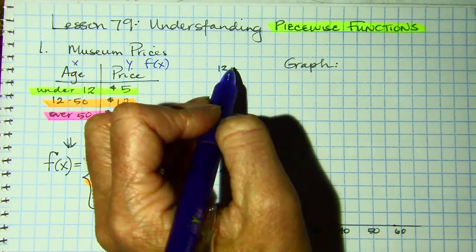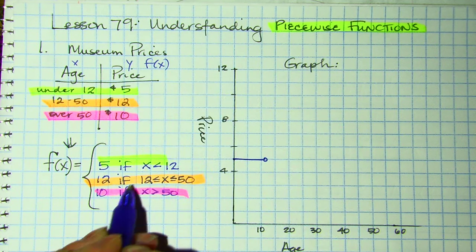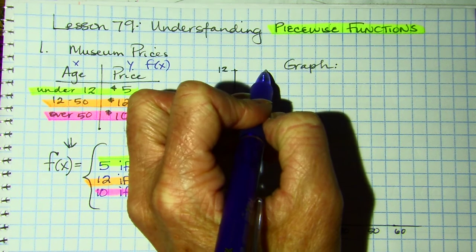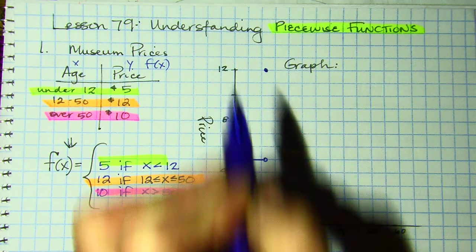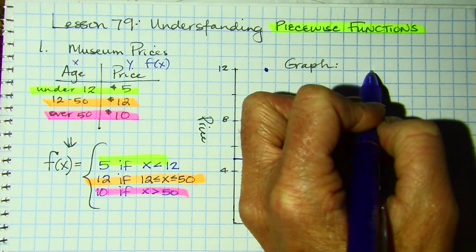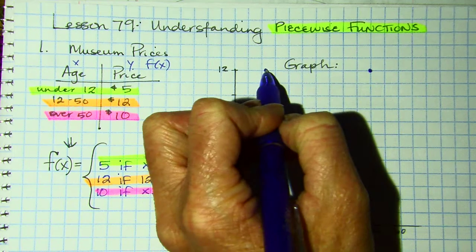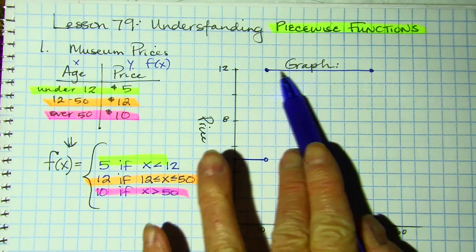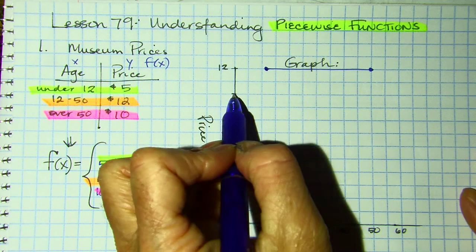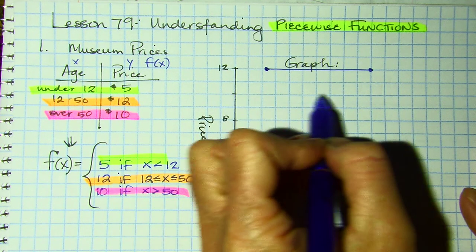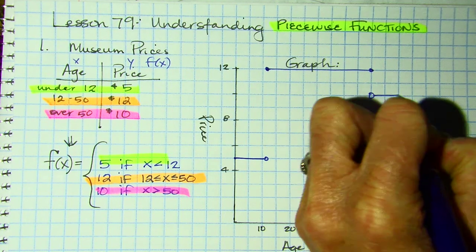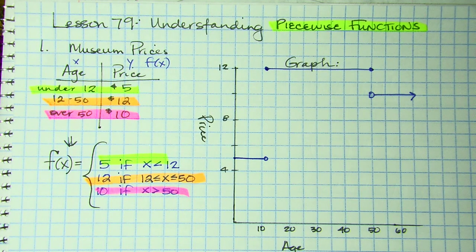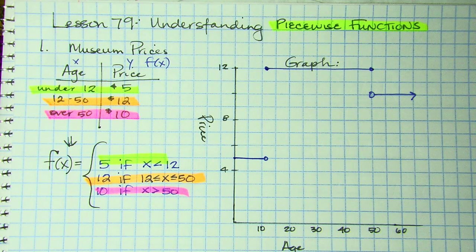It's $12 if you are between the ages of 12 and 50. On 12, I'm going to put a closed dot — it's equal to — all the way to 50, also a closed dot because it says equal to. It's flat because it's $12 for everybody in there. Now it's $10 if you're 50 or older. I'll point to the right because that could include anyone from 51 all the way to 91. Notice it is open because it doesn't say equal to.